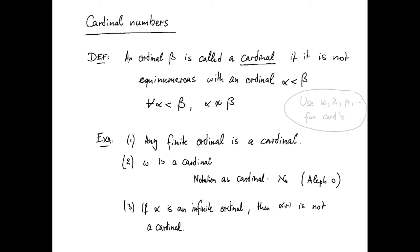To sum up this and give a formal definition of cardinals: an ordinal beta is a cardinal if it is not equinumerous with a smaller ordinal. So that means for all ordinals less than beta, alpha is not—there's no bijection between alpha and beta.